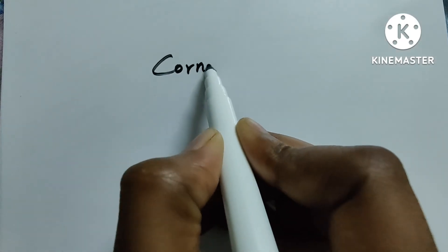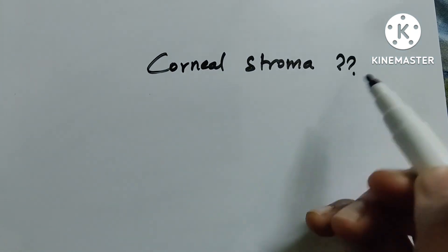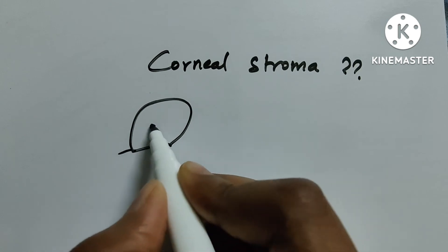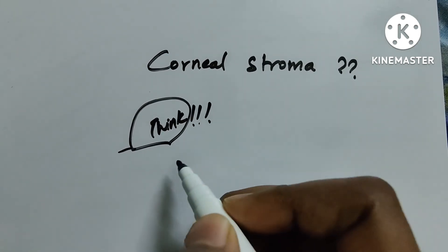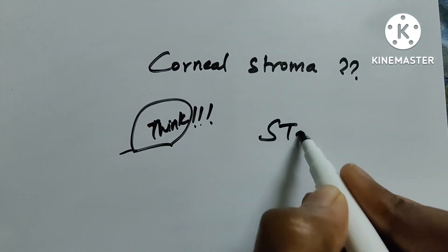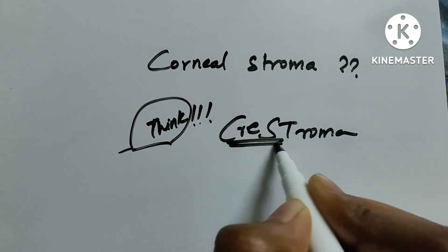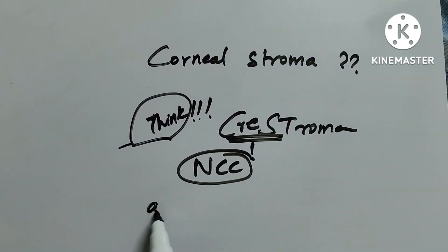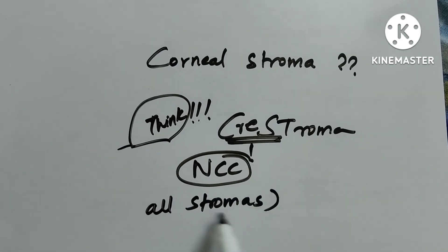Now corneal stroma — think about it. Stroma is from neural crest cells. ST in neural crest cells stands for stroma. The other part of the CREST mnemonic: C is for ciliary muscles, ST is for stroma. This completes the corneal stroma question — it is from neural crest cells.